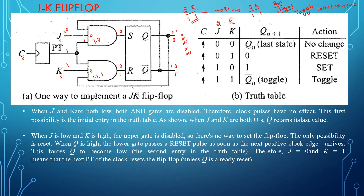When J is equal to 1 and K is equal to 0: the lower gate is continuously off and cannot be enabled. But the clock input is 1, J is 1, and from the previous state Q-bar was 1, so the feedback makes the upper gate: 1 into 1 into 1, which drives S high. When S is equal to 1 the flip-flop is set, and the output Q becomes 1 while Q-bar becomes 0.